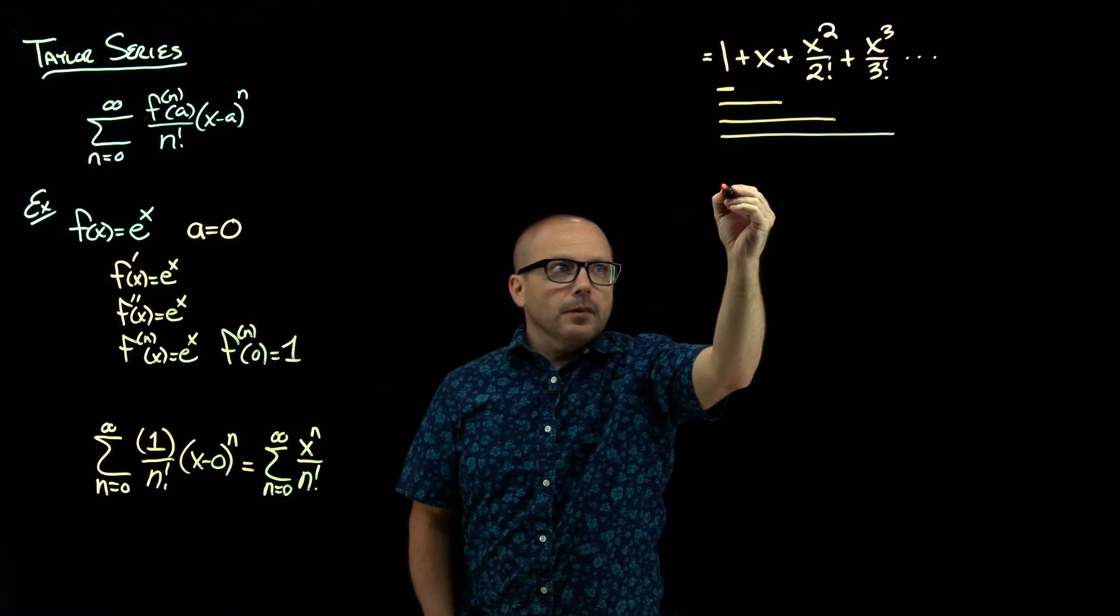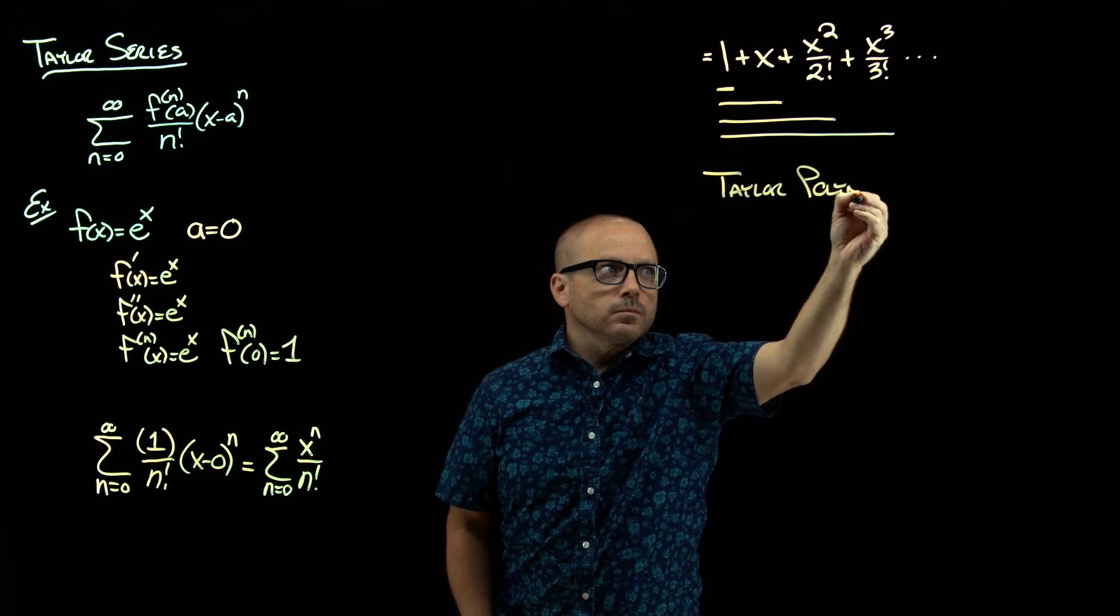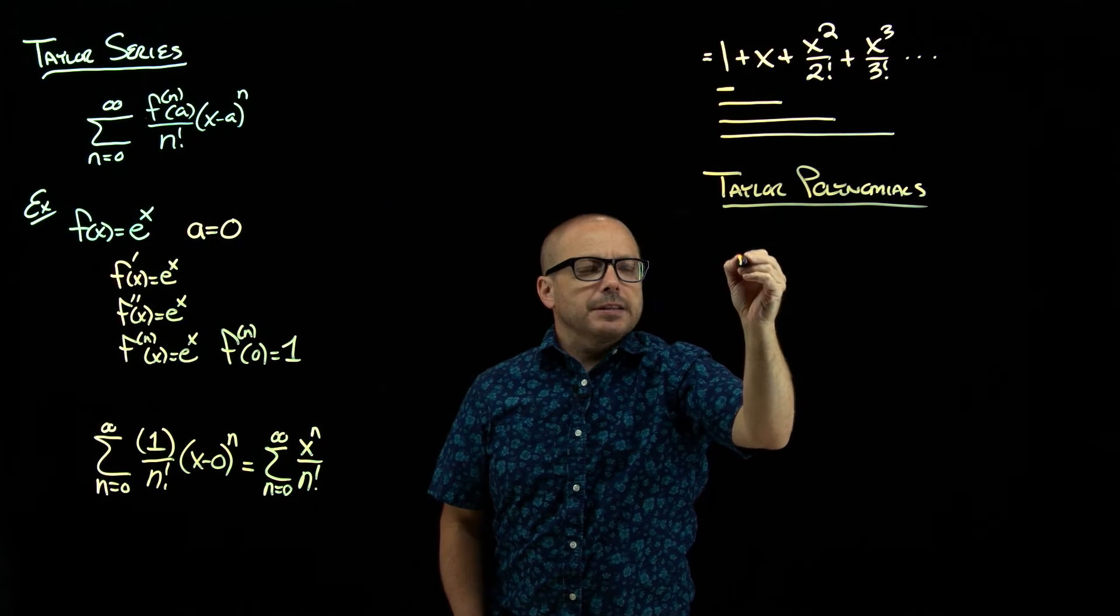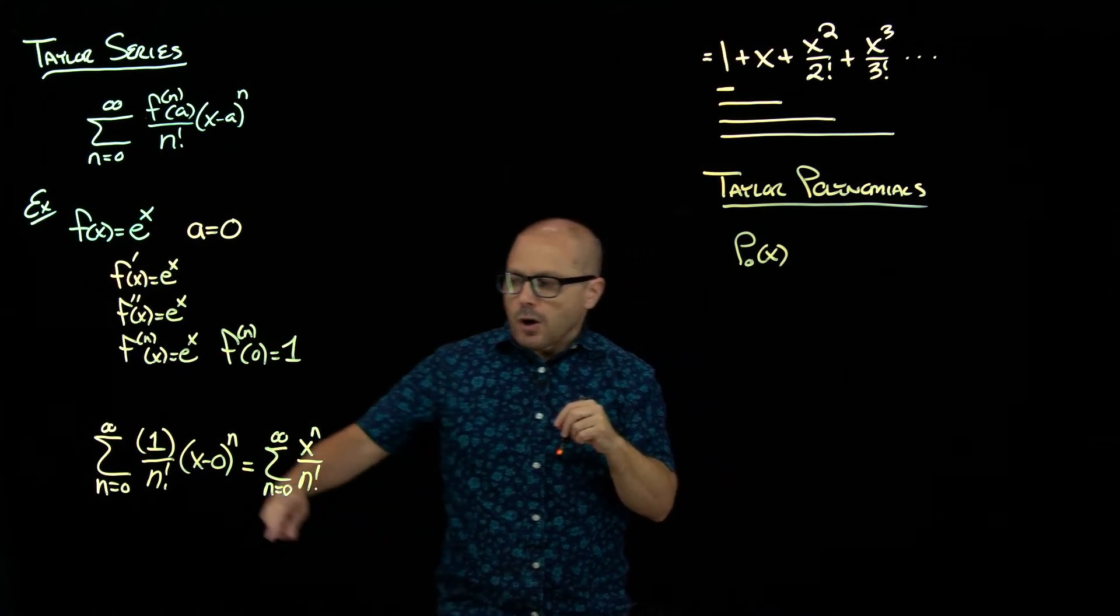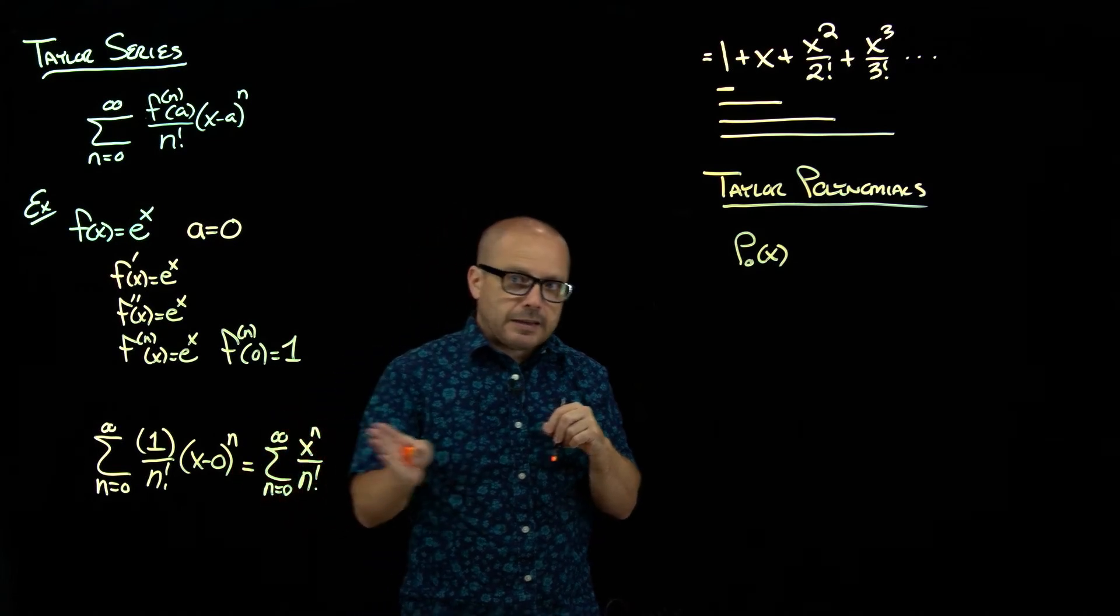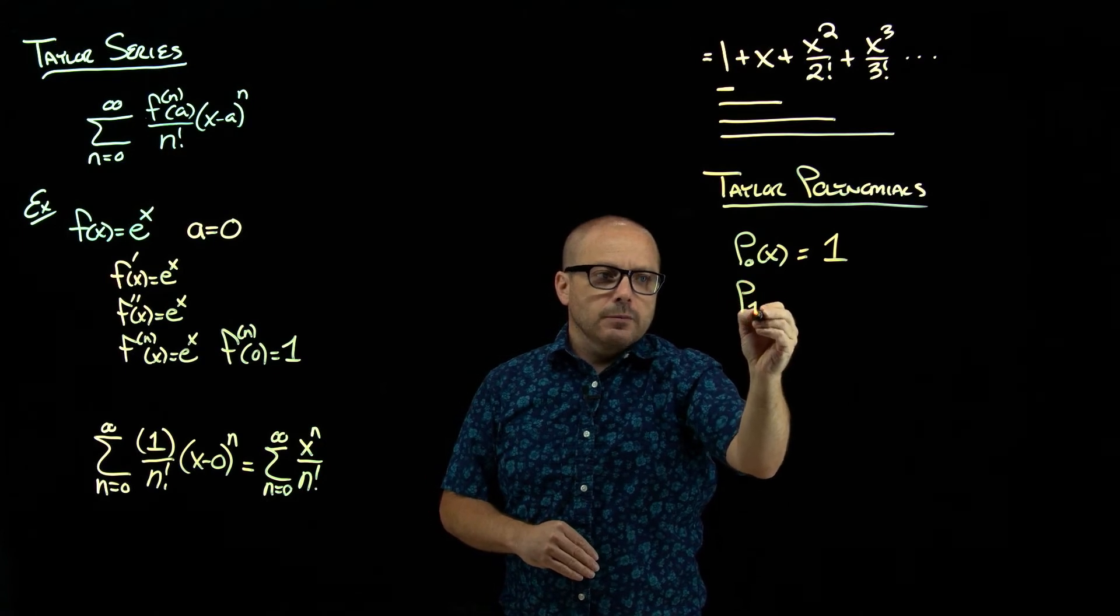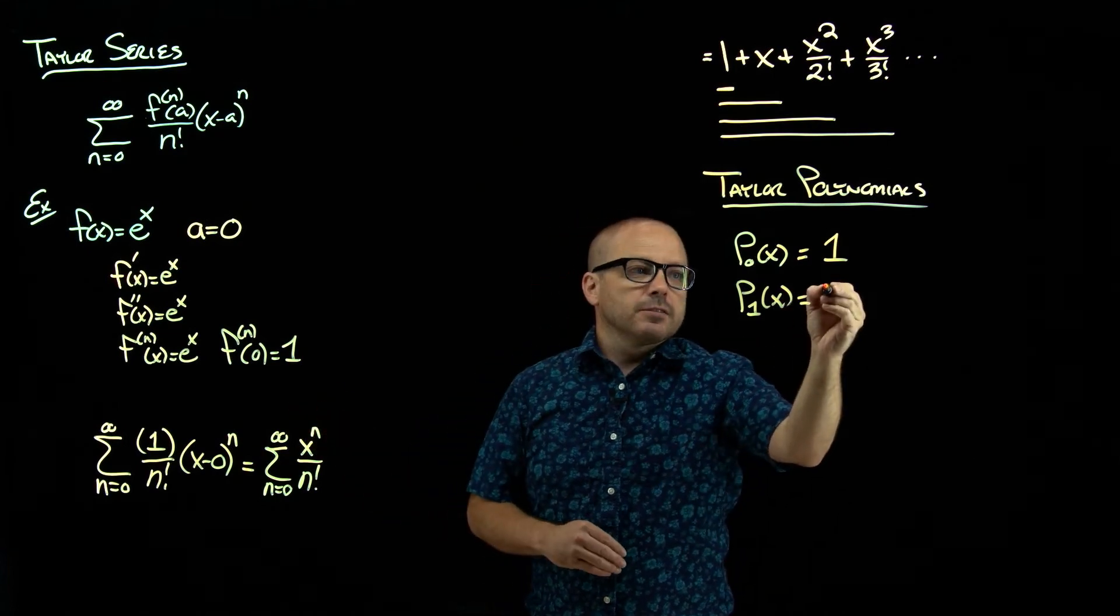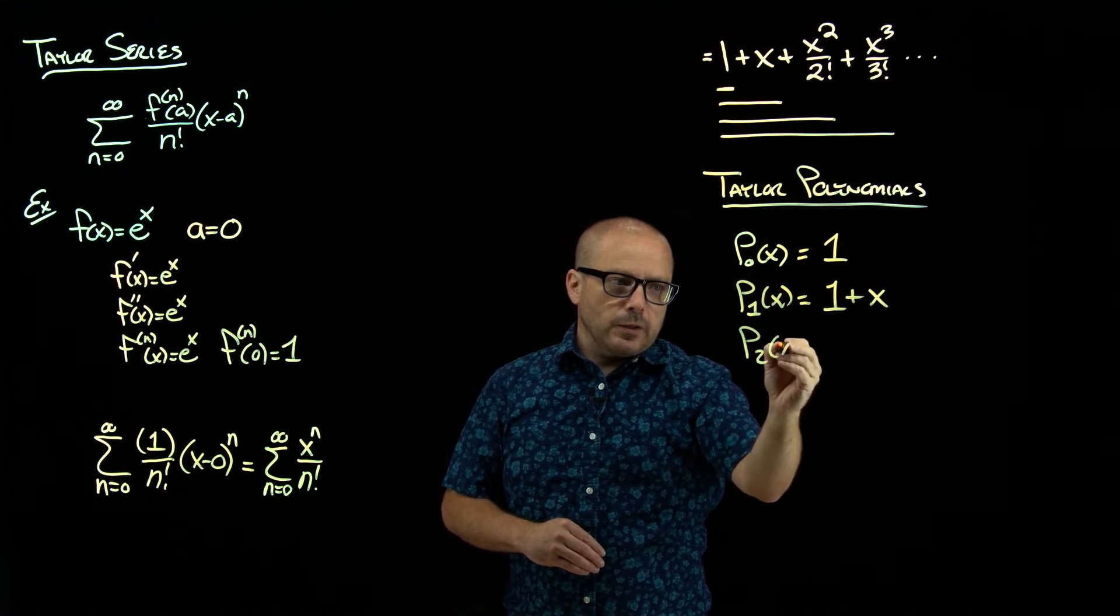So our Taylor polynomials here, and we typically subscript them by what we call their order. So the zero order means go in your series up to the zero degree and take all those terms. Well, for us, that's just one. And the first order means take the partial sum all the way up to that first degree term, or matching up to the first derivative, second order Taylor polynomial, and so on.